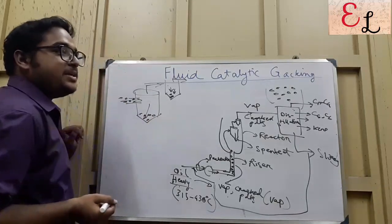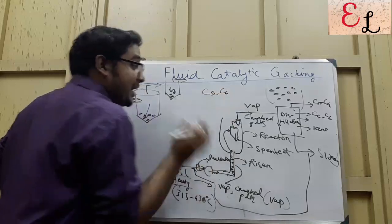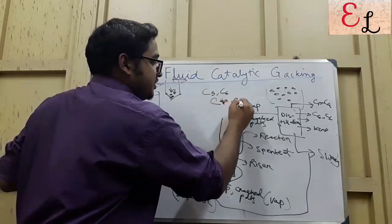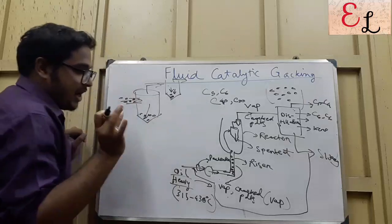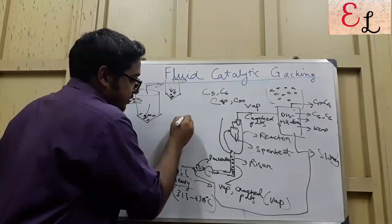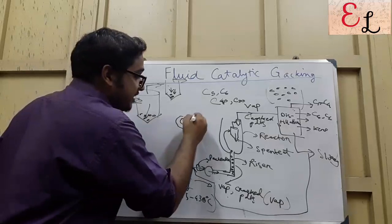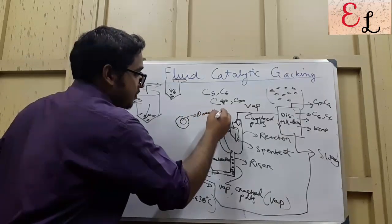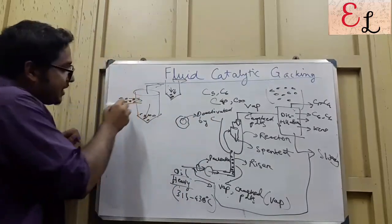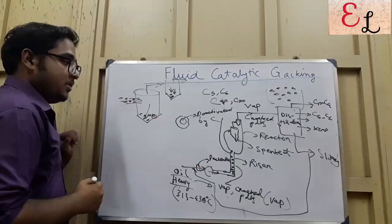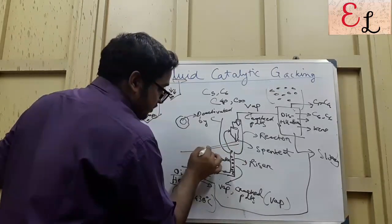Why is the catalyst spent? Because whenever cracking occurs, low weight carbon like C5 or C6 is formed, and also a high weight carbon around C30 to C40 is formed. That high weight carbon or deposit carbon settles around the catalyst, blocking the catalyst pores so the catalyst no longer remains activated — it becomes deactivated by carbon formed due to cracking. All these catalysts are surrounded by layers of carbon, so this has to be removed by some means.